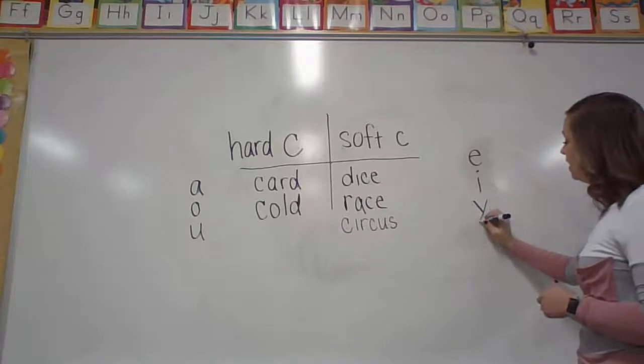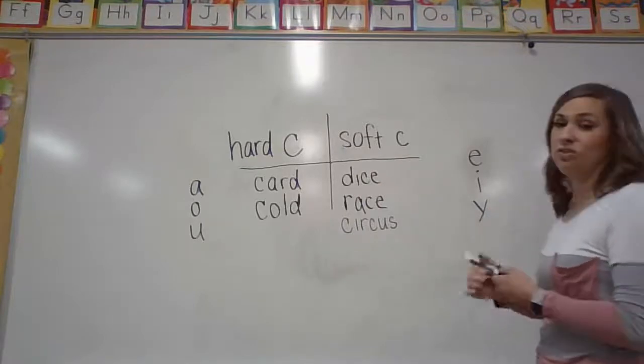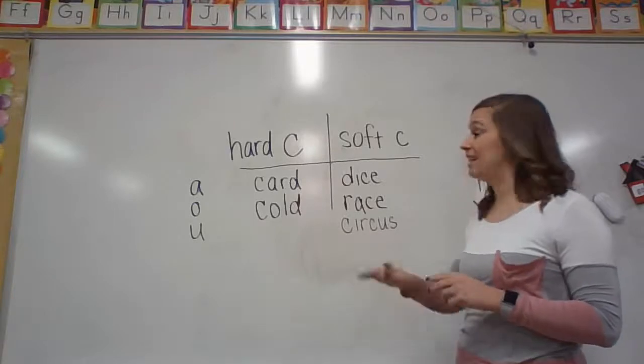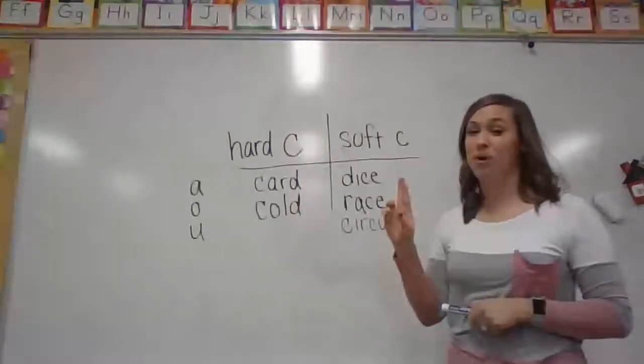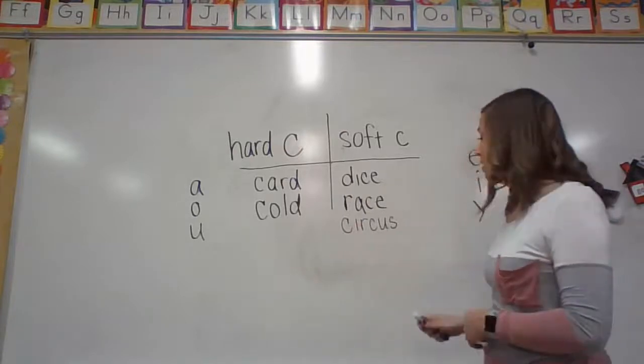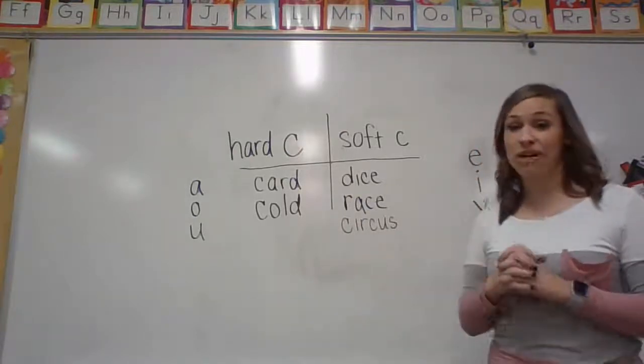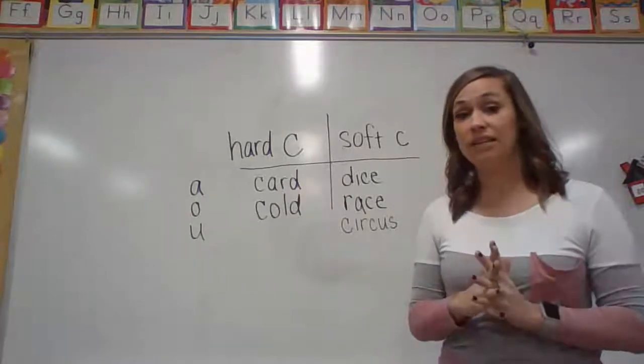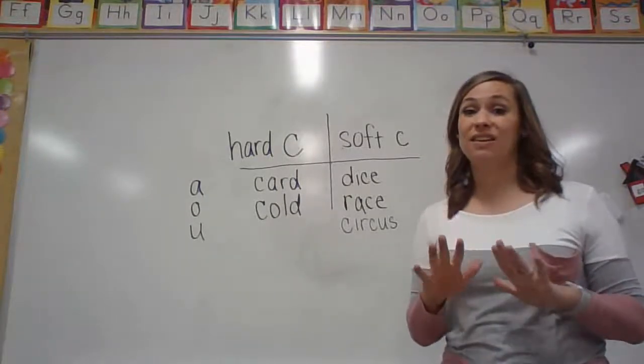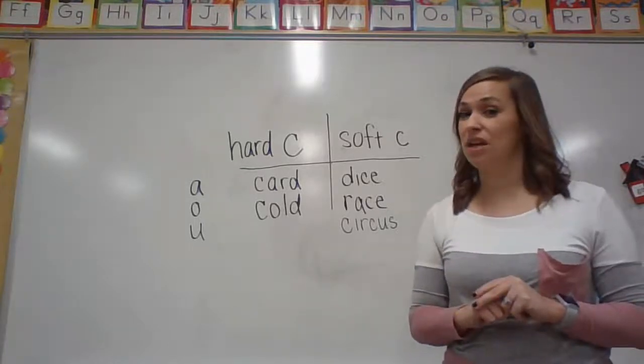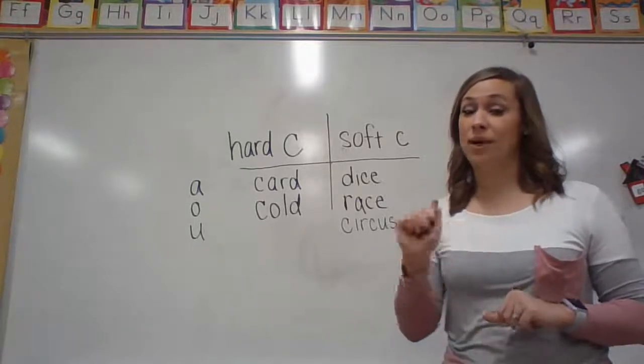Now soft C or hard C words aren't just found at the beginning of the words. You can also find hard C at the end of the words, but it's usually partnered with the letter K, like in the word back or track. So your job today is when you're reading on your learning A to Z books, I want you to see if you can find any hard C or soft C words. And if you do, I want you to write them down.